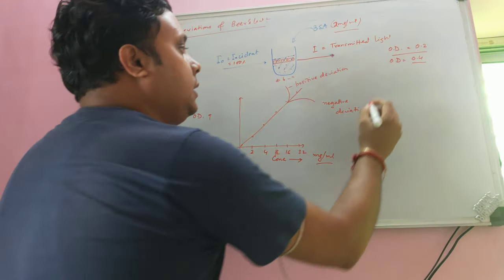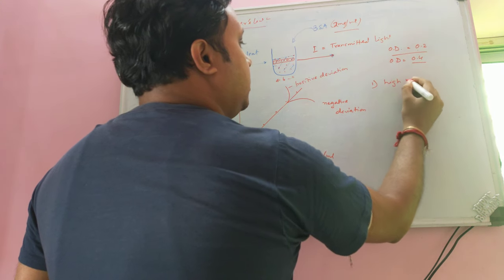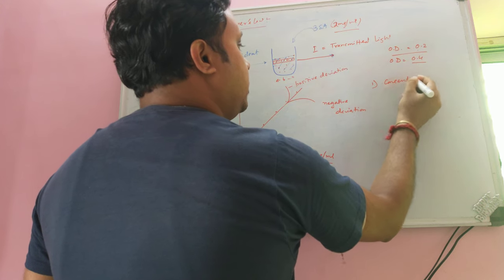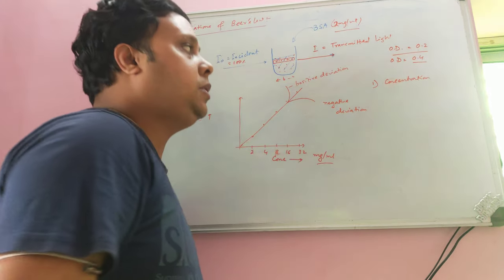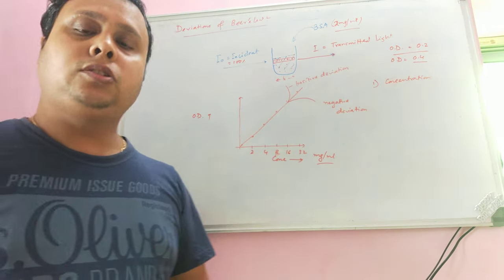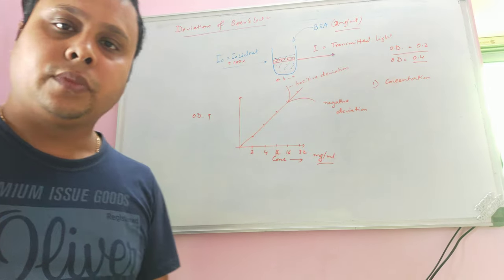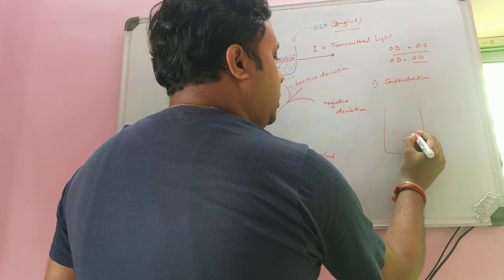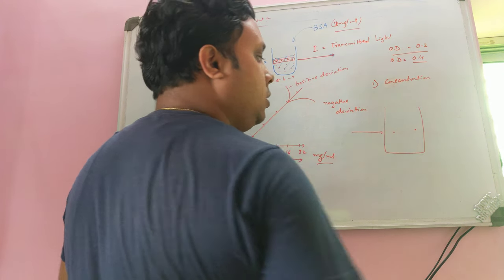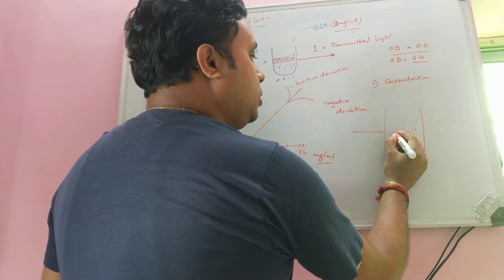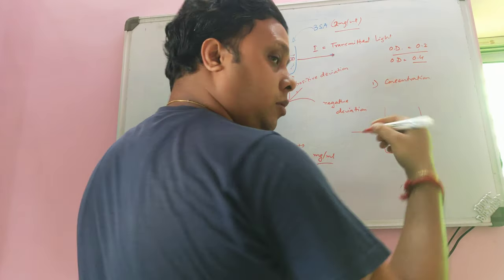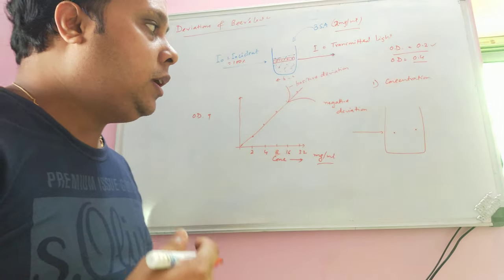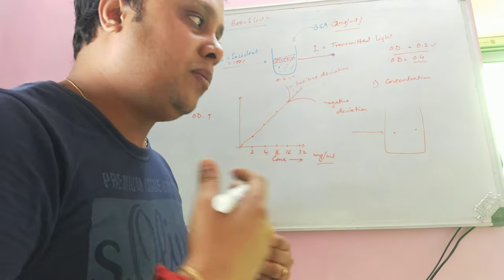The first cause of deviation is concentration — specifically high concentration. According to Beer's Law, the more the concentration, the more the OD. In a cuvette with two molecules present far apart, each molecule absorbs light independently and you get an OD of, say, 0.2. But when we add more molecules, increasing the concentration, more molecules are present nearby.